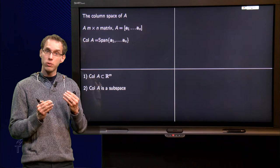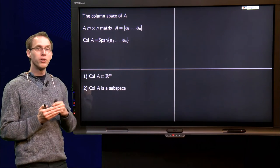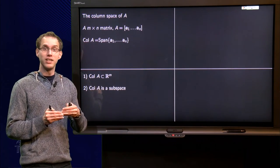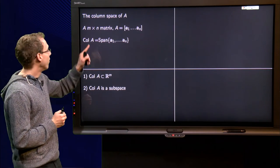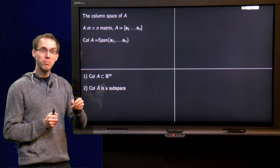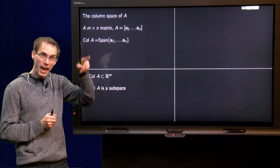Then we know two things. First of all, the column space of A is contained in R^M. Why is that? Well, A is an M times N matrix. That means that the height of all columns is M.